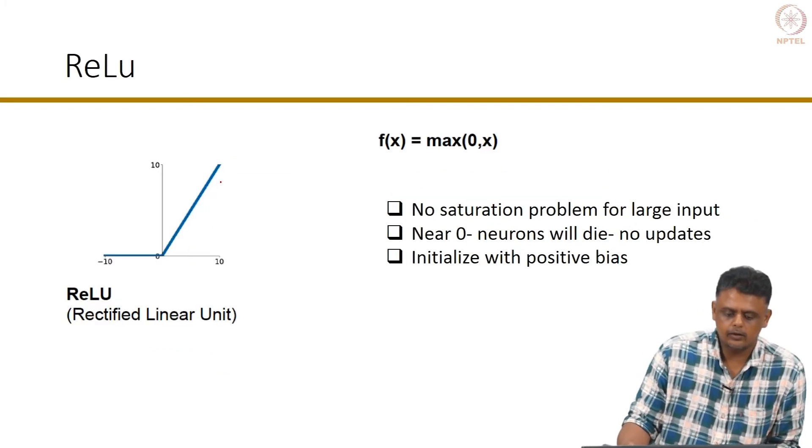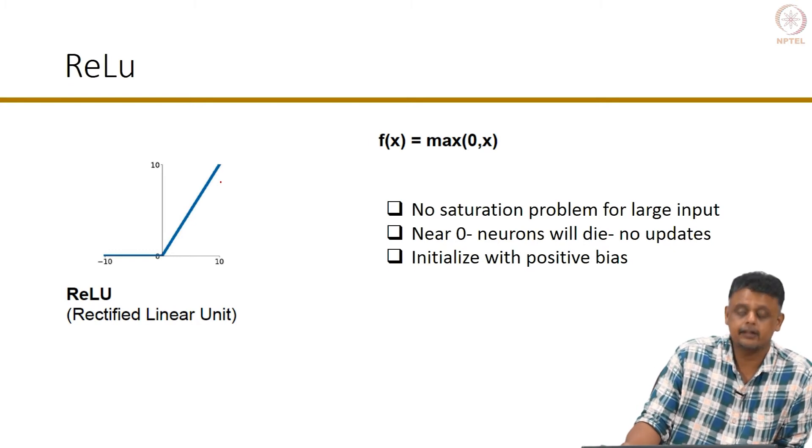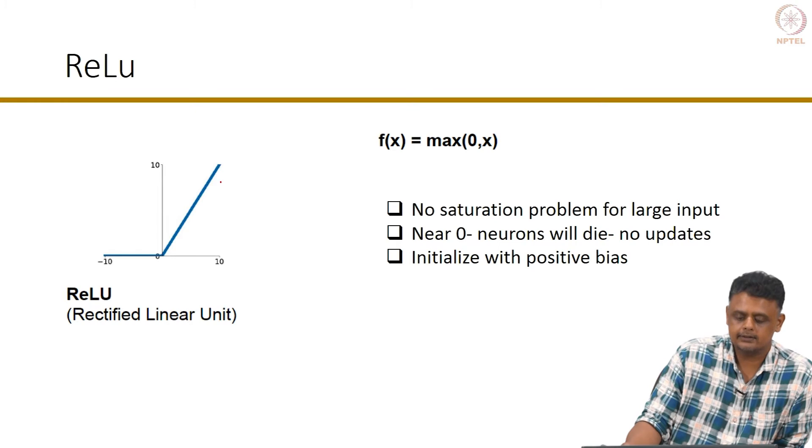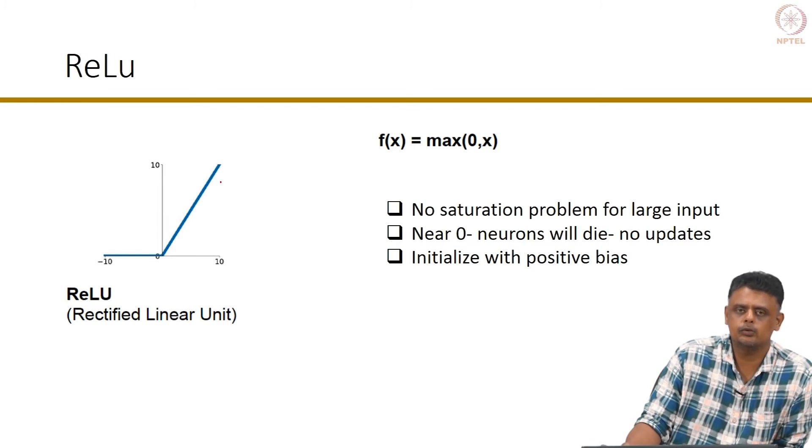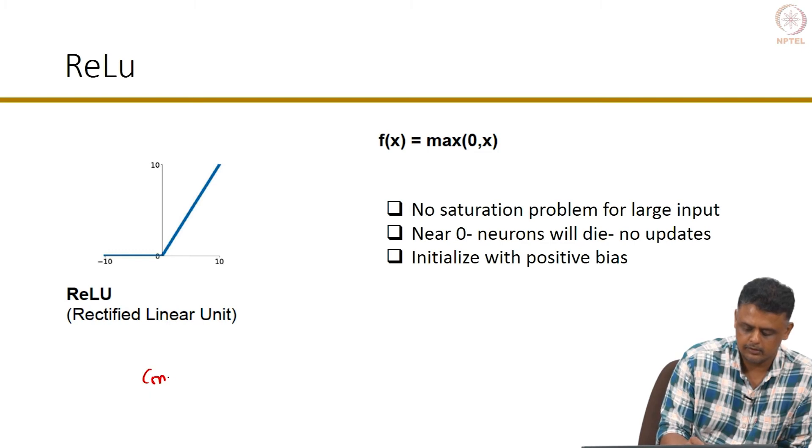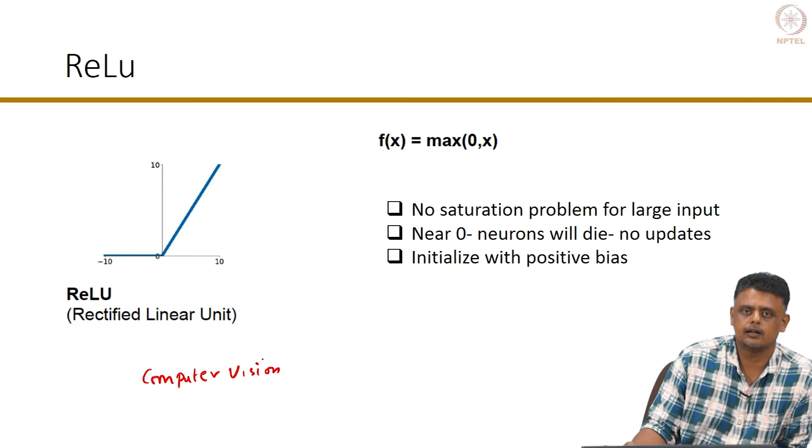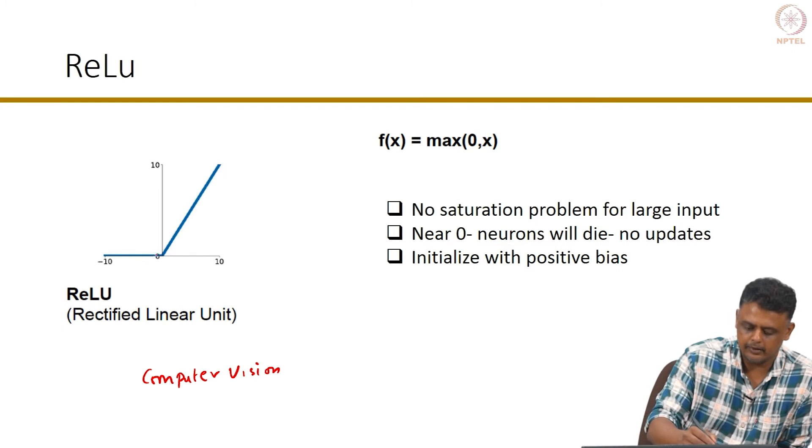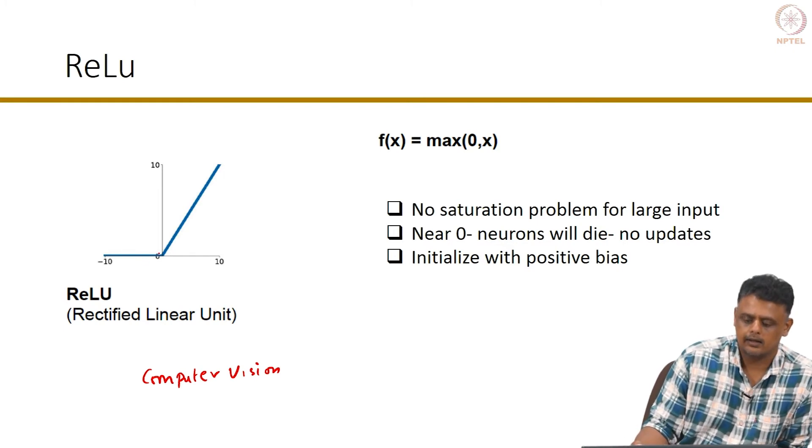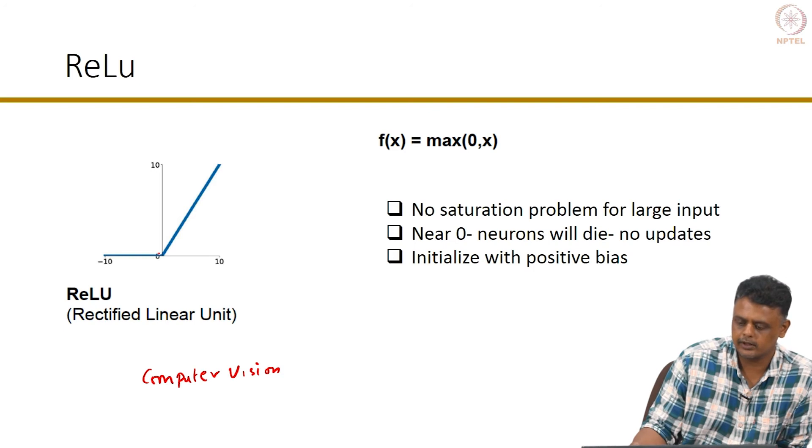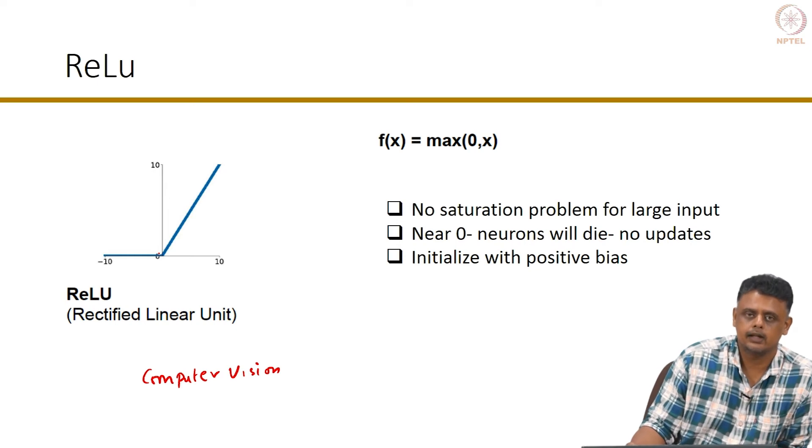This is the most effective, the ReLU or the rectified linear unit. It is one of the more effective activation functions and has been used widely in computer vision problems, very successful in computer vision problems. This is one of the preferred activation functions for many of the modern network architectures that are out there. It is very simple: for all values greater than 0, it just gives the same value, that is basically identity for all values of x greater than or equal to 0, and for any input less than 0 the output is 0.